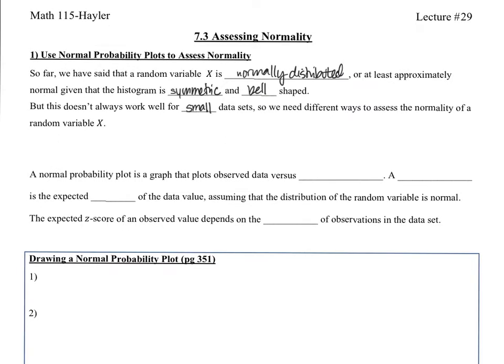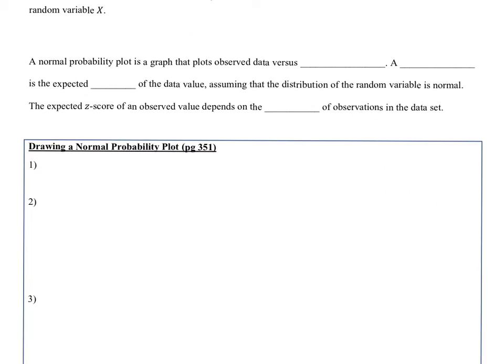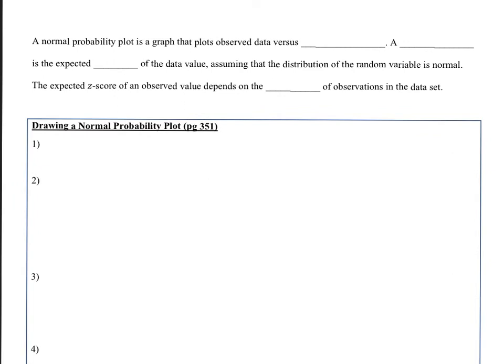We need different ways to assess the normality of a random variable X if it's a small data set. A normal probability plot is a graph of observed data plotted versus normal scores. A normal score is the expected z-score of the data value assuming the distribution of the random variable is normal. The expected z-score of an observed value depends on the number of observations in the data set.